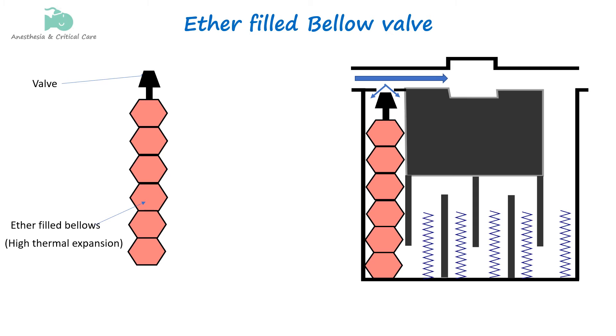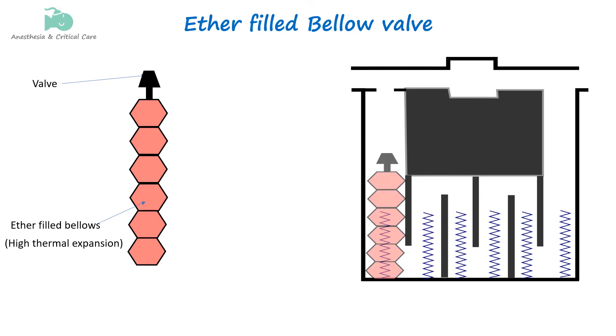When the bellows contracts at lower temperatures, it opens up more pathways to the vaporizing chamber so as to allow more anesthetic vapor to be picked up by the increased flow.